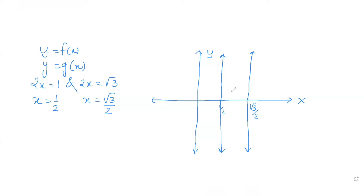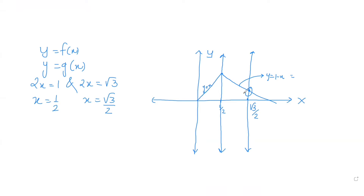Now for f(x): from 0 to 1/2 it is given as y = x, which is a straight line going up. From 1/2 to 1, f(x) = 1 - x, which is a declining line. At x = √3/2, the y-coordinate on this line is 1 - √3/2.